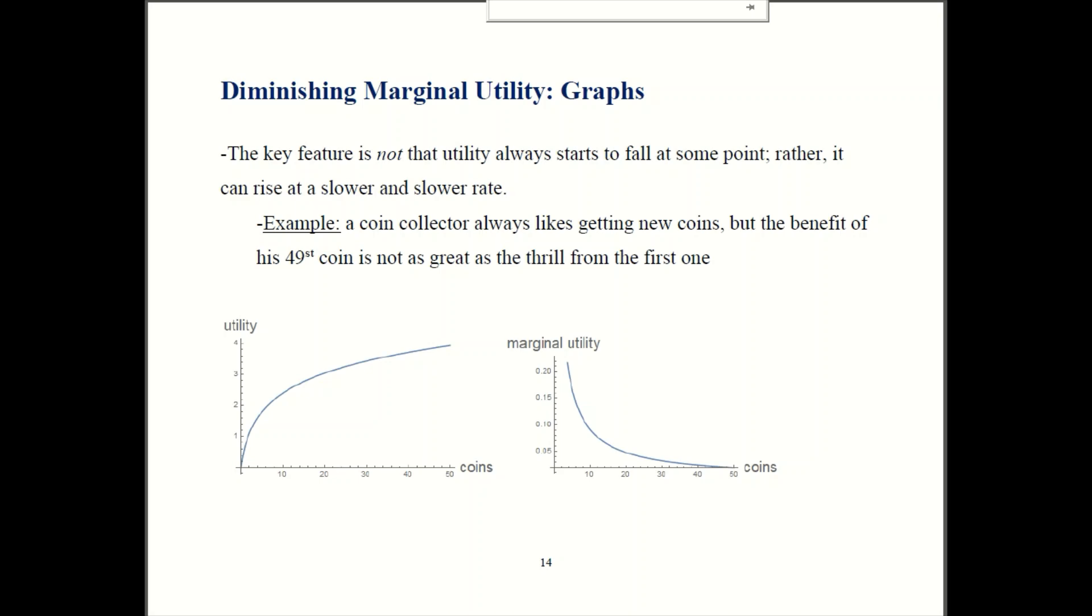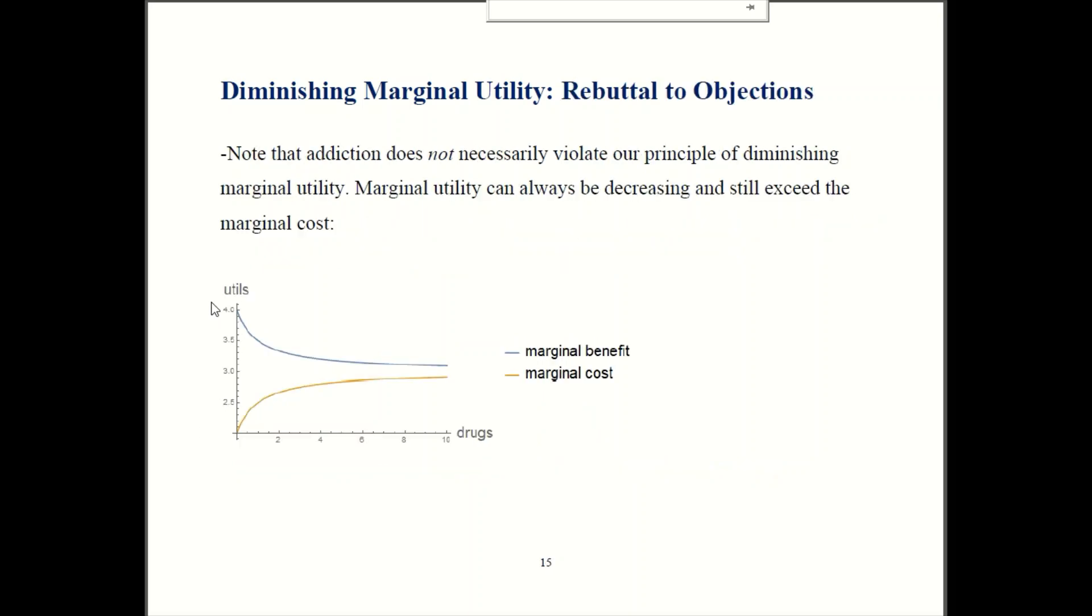So when I tell people about diminishing marginal utility, a common objection I hear is what about addiction? What about someone who just gets hooked on drugs and they find they can't really stop themselves? Shouldn't diminishing marginal utility mean that the utility of drugs goes down and down and down until it's no longer worth it? Well it turns out that even addiction can still be compatible with diminishing marginal utility. So here's how I can make that happen.